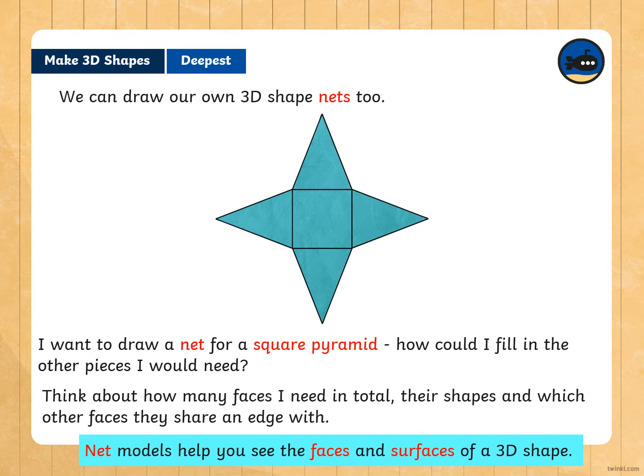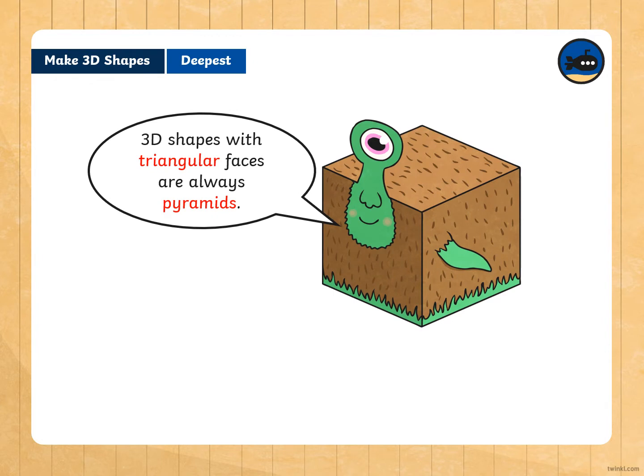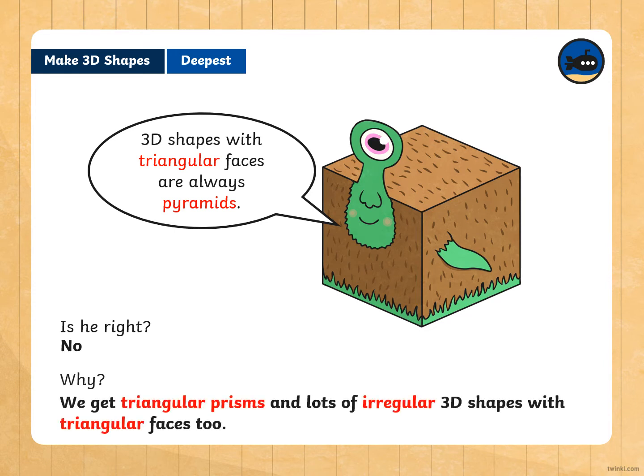Net models help you see the faces and surfaces of a three-dimensional shape. 3D shapes with triangular faces are always pyramids. What do you think? Is he right? It's a big no. Why? Because we can get triangular prisms and lots of irregular 3D shapes with triangular faces too.